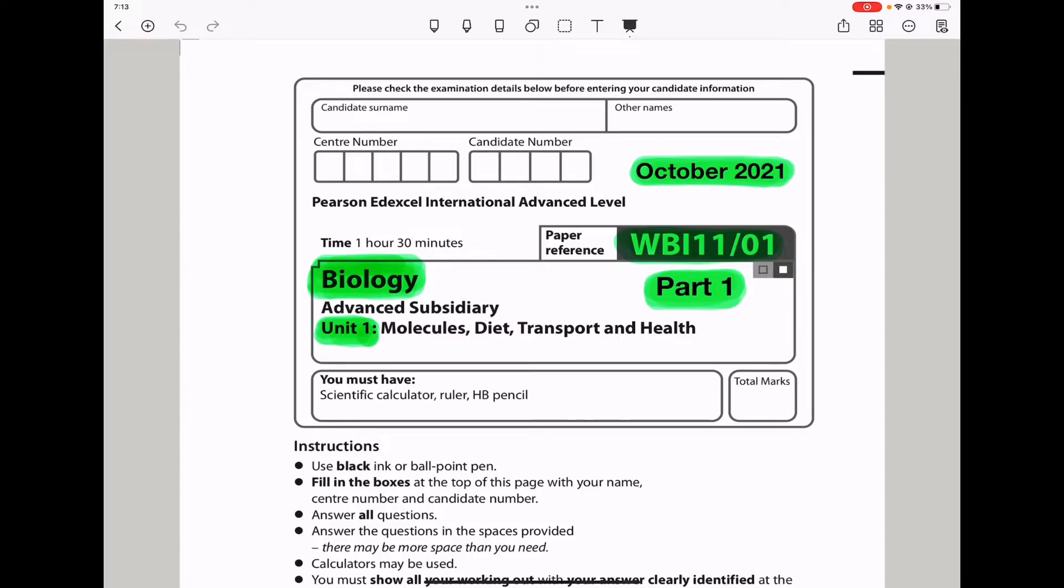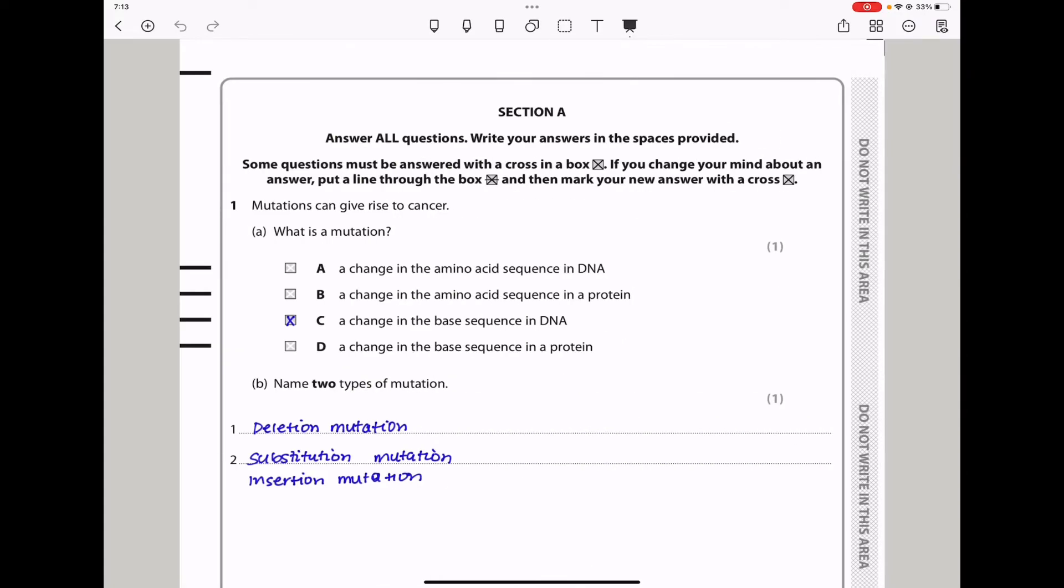Let's begin with the first question. Question 1 says mutations can give rise to cancer. What is a mutation? A mutation is a random change to the base sequence of DNA. And when we look among the answers provided here, C is the perfect answer. A mutation is a change in the base sequence of DNA.